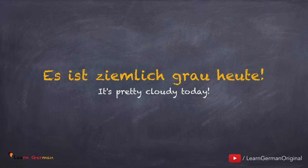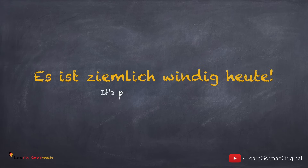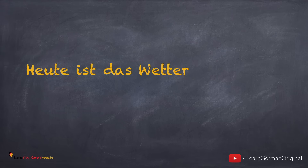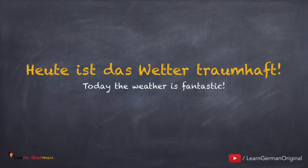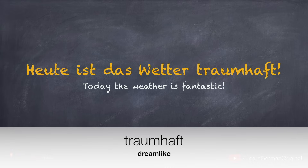We also learned that you can say es ist bedeckt, oder es ist bewölkt. Similarly, when it's windy you can say es ist ziemlich windig heute. Another very common sentence you will hear is heute ist das Wetter traumhaft — this is only used when the weather is really beautiful. Der Traum means dream, and traumhaft means dreamlike.